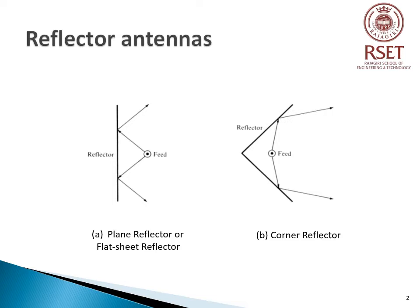Figure A shows a Plane Reflector, which is the simplest. It is used to direct energy in a desired direction. As the figure shows, we have the source or feed placed and the reflector helps in directing energy towards the right-hand side. Figure B shows a Corner Reflector, with two Plane Reflectors intersecting at an angle less than 180 degrees, giving a sharper radiation. This arrangement is called an Active Corner Reflector. A Corner Reflector without an exciting antenna can be used as a Passive Reflector.